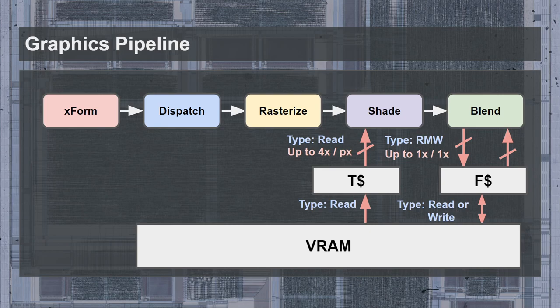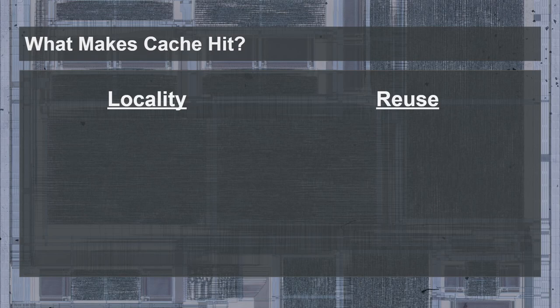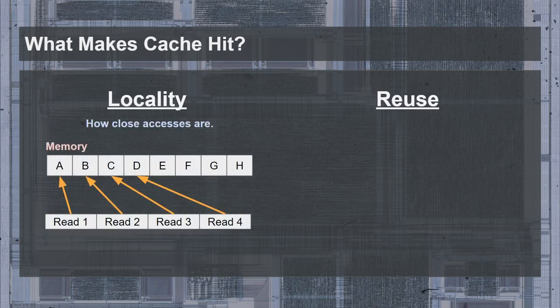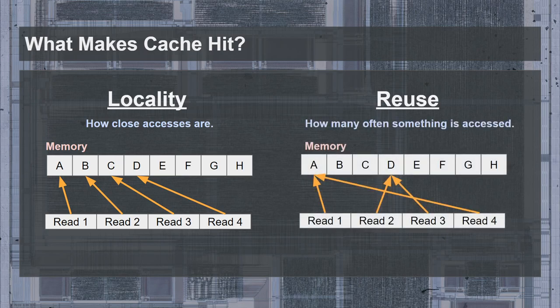So all we have to do is try to maximize the cache hits, so that the pipeline rarely has to fall back on the VRAM. There are two properties needed to ensure that memory requests hit in a cache: locality and reuse. Locality is how close accesses are in memory — if consecutive accesses are close together, then the pattern has a high degree of locality. Reuse on the other hand is how often a part of memory is accessed — if parts of memory are accessed over and over again, then the access pattern has a high degree of reuse. A high cache hit rate requires both of these properties.